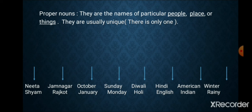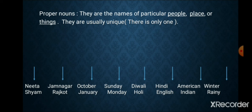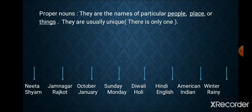Languages are also proper nouns — there are different types of languages and every language has its own name, like Hindi, English, Gujarati, Marathi. Names of countries like America, India, Russia, Australia — every country has its own special, specific name, so these are proper nouns. And names of seasons like winter, rainy, summer — every season has its own name, so such words are also known as proper nouns.